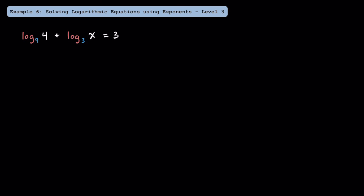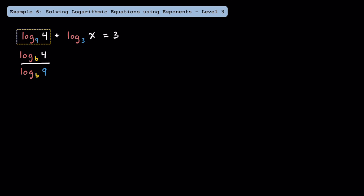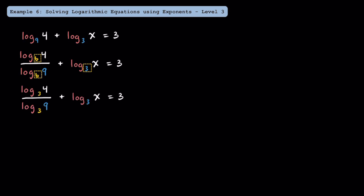Here's example 6, where we're going to solve a more difficult logarithmic equation. The reason why equations like this give people trouble is because they have logarithms with different bases. Since these logs have different bases, we can't do any condensing. However, the trick we're going to use here is the change of base formula. Using the change of base formula, we can rewrite log base 9 of 4 as log base b of 4 over log base b of 9. The key is to choose a base that matches the other base we already have, which is 3. Rewriting, we have log base 3 of 4 over log base 3 of 9 plus log base 3 of x is equal to 3.